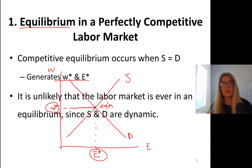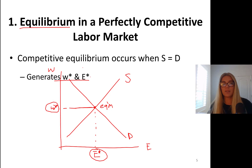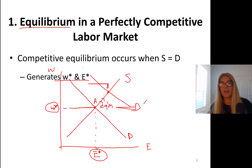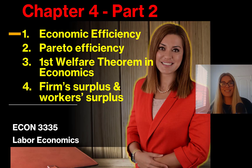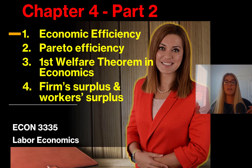Keep in mind — it's unlikely that the labor market is ever in equilibrium since supply and demand are dynamic. At any point in time you can see the demand curve shifting to the right; let's say a new Tesla factory moves into town, so the equilibrium moves from point A to point B. Or the supply curve could be shifting, moving to a new equilibrium with higher wages and higher employment. The model suggests that the market is always moving toward equilibrium. I'll see you in part 2, where we talk about economic efficiency, Pareto efficiency, the first welfare theorem, and we will learn about worker surplus and firm surplus. See you in part 2.